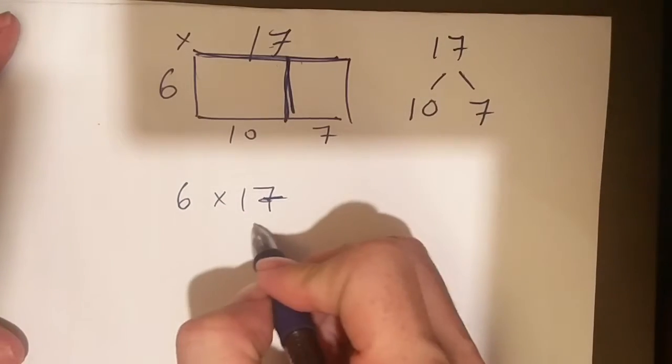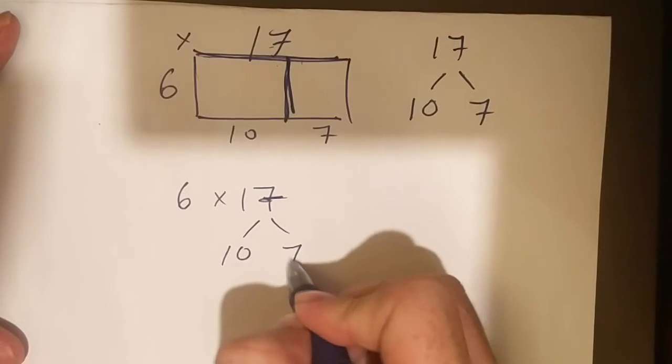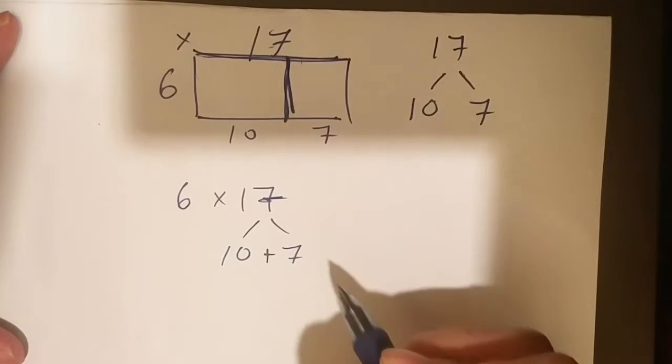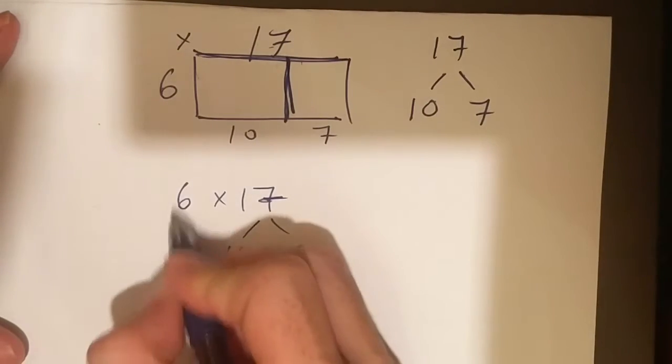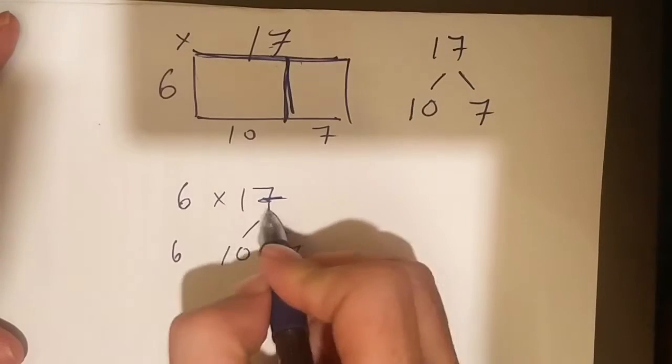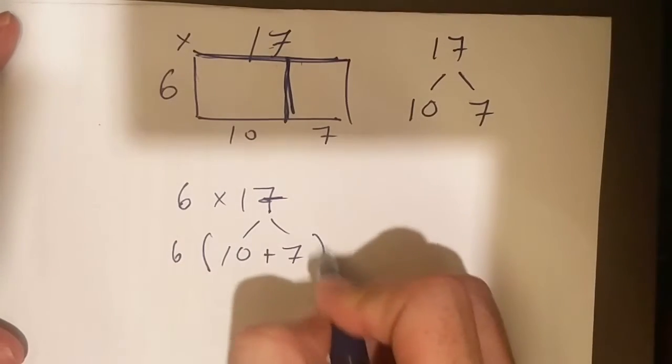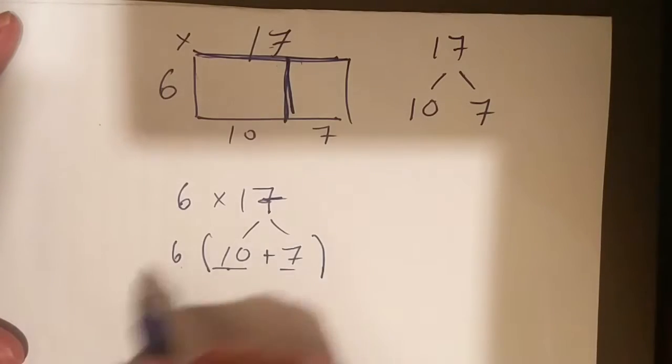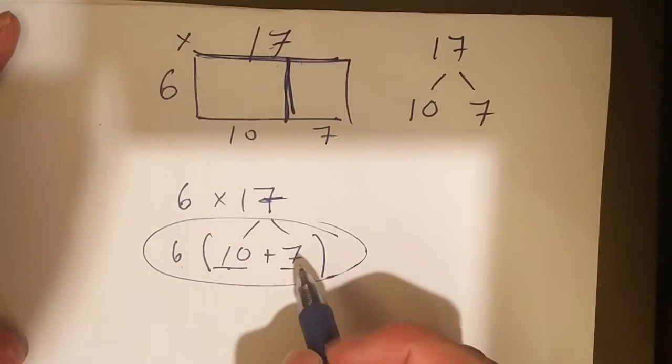But what else can I do? I can split it up into 6 and 7. Or sorry, 10 and 7. That can be split up to 10 plus 7. But remember I have the 6. 6 times 17, so 6 is timesing 10 plus 7. And this here folks, that is the distributive property.